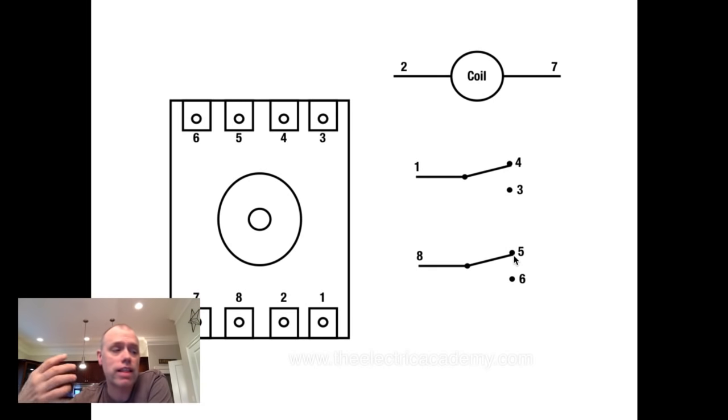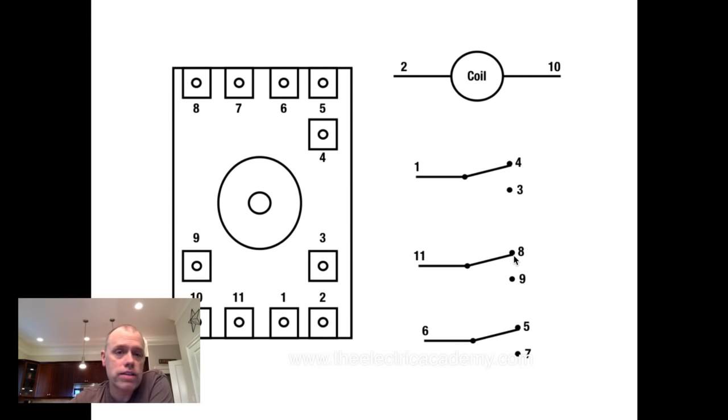Now, if you need even more contacts, that is where the 11 pin relay comes in. All it is, is just another set of contacts down here. So it gives you three full sets of contacts.